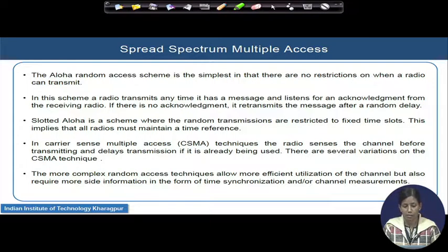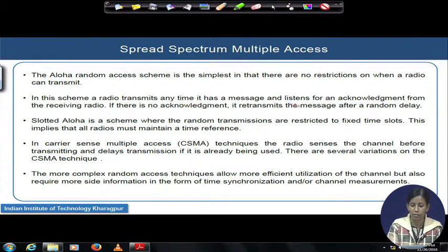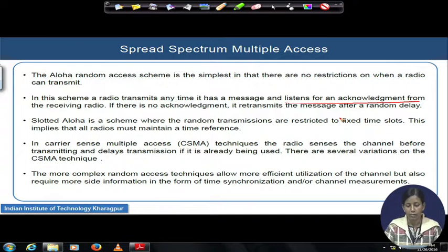Different random access schemes exist in practice, and Aloha is a very popular one. This random Aloha scheme has no restriction over the number of radios or when a radio can transmit. In the Aloha scheme, a radio transmits whenever it has a message and can listen for acknowledgement. It transmits whenever it has a message and keeps on listening whether some acknowledgement is sent from the intended receiving radio. If no acknowledgement is there, it will keep on retransmitting. In a random fashion, a lot of collisions may happen. To improve performance, people came up with the slotted Aloha scheme.